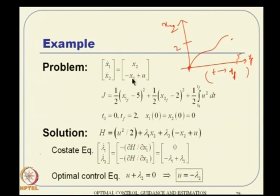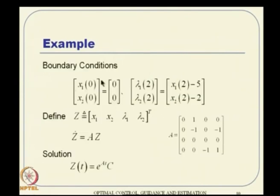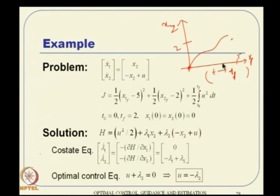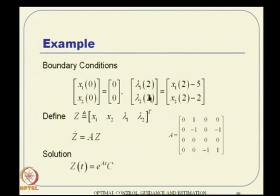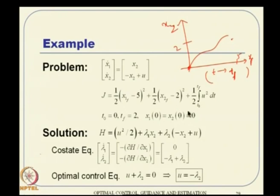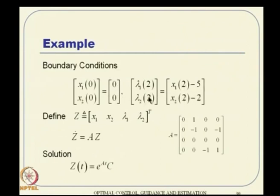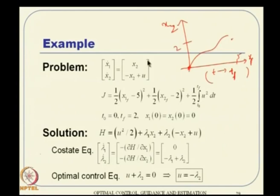Boundary conditions: x(0) = [0, 0] and, since x_f is free, lambda_f = del-phi / del-x_f. So lambda1(2) = del-phi / del-x1_f and lambda2(2) = del-phi / del-x2_f. To solve, we define a combined state vector z = [x1, x2, lambda1, lambda2] and note that since all equations are linear in z, we can write z-dot = A*z and use the matrix exponential solution z(t) = e^{At} * c.